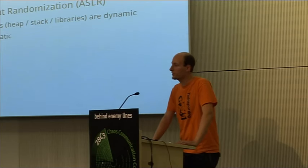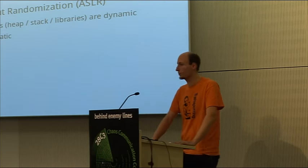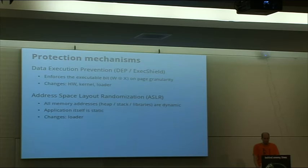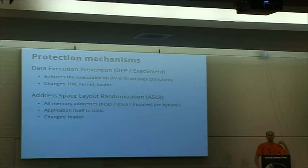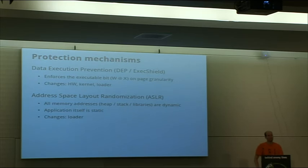The next protection mechanism is address-space layout randomization. ASLR is a probabilistic protection mechanism enabled by default on current kernels. ASLR enforces that all memory addresses on the heap, on the stack, and for all libraries are dynamically shuffled and randomized. This means we can no longer redirect the return instruction pointer to the beginning of the buffer because we have no idea where it is in memory. However, the current Linux implementation uses a static application where some parts still reside at a fixed address due to optimization issues — and that's what we're going to use.